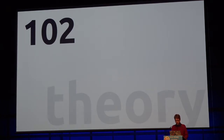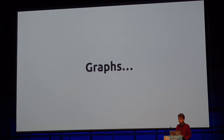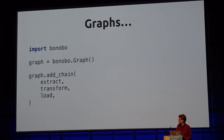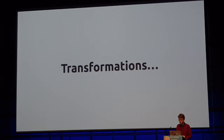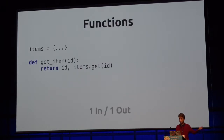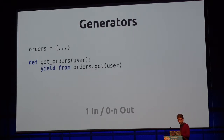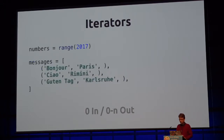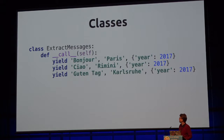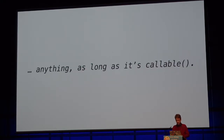The theory behind Bonobo uses graphs — a simple list of nodes and edges. You can create all kinds of graphs as long as they are acyclic. The nodes or transformations can be basically anything: functions when one row of input matches one row of output, generators for any number of outputs per input, iterators if you have no input but want to yield things, or any callable — like a class with a __call__ method. Anything callable in Python can be used as a node in the graph.